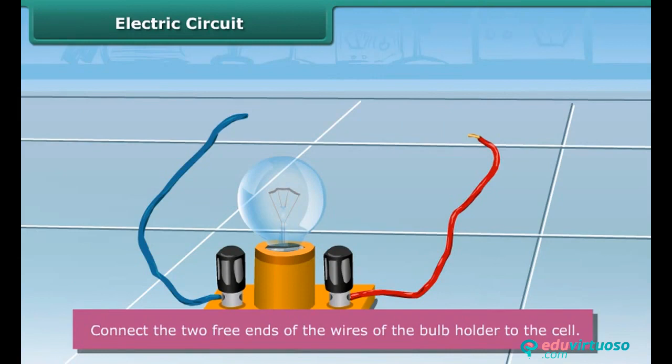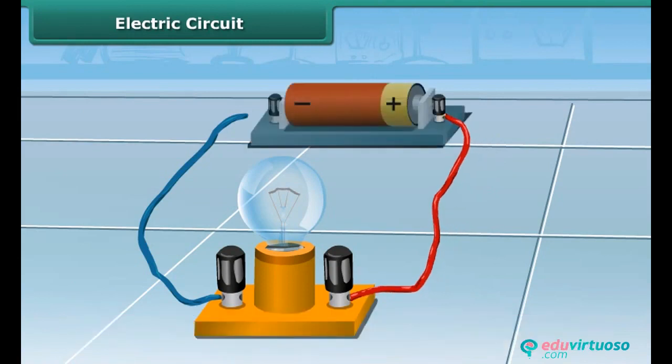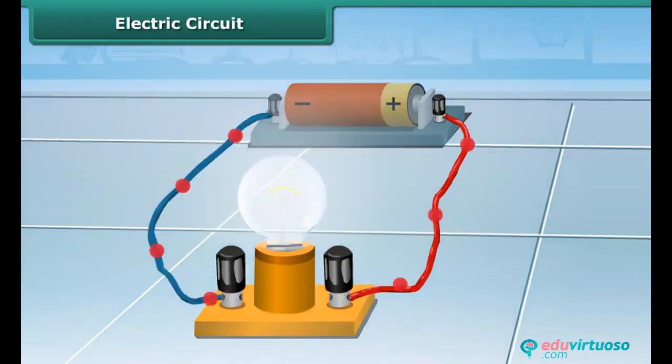Finally, connect the free end of one wire to the positive terminal of the cell and the free end of the other wire to the negative terminal of the cell. This may be done with the help of a rubber band or an adhesive tape. After the connection, you can see that the bulb lights up.